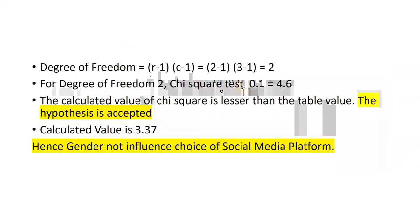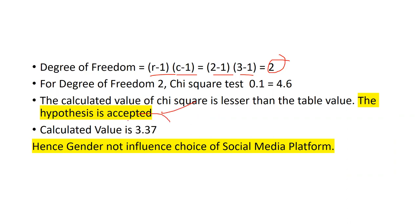The degree of freedom was already calculated as (r − 1)(c − 1) = (2 − 1)(3 − 1) = 2. We check the chi-square table at this degree of freedom. The calculated value of chi-square is lesser than the table value, so in this problem the null hypothesis is accepted. The calculated value is 3.37 and the table value is 4.6. Since 3.37 is less than 4.6, we accept the null hypothesis. Hence, gender does not influence choice of social media platform.